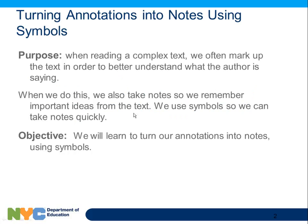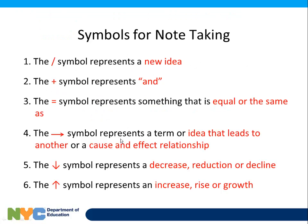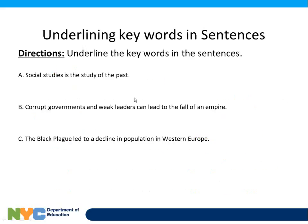If you know how to text, you know how to write in code. Why do we do this? So it's faster. Here are some symbols: the slash means 'here's a new idea,' plus means 'and,' equal means 'equal to.' The little arrow means 'it leads to.' The down arrow means down. The up arrow means up. A four-year-old could figure this out.